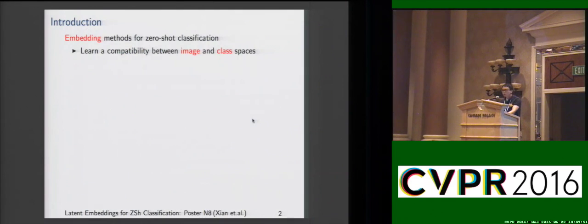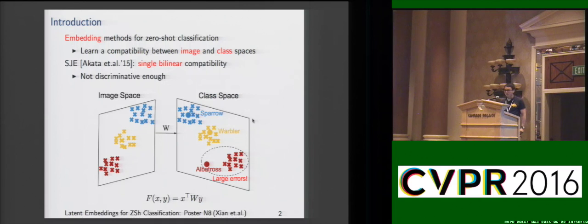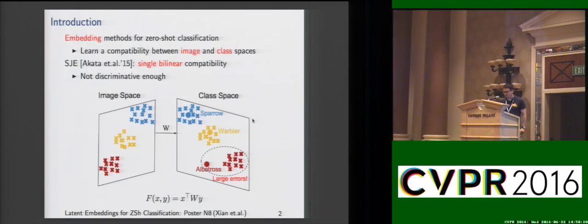In this work, we are interested in embedding methods for zero-shot classification, which learn a compatibility function between image and class embedding spaces. Structured Joint Embedding Model proposes to learn a single embedding matrix and form a bilinear compatibility function F, where F denotes the image embedding, Y denotes the class embedding, and W is the embedding matrix to learn. This compatibility function measures similarity between any image and class embedding pairs.